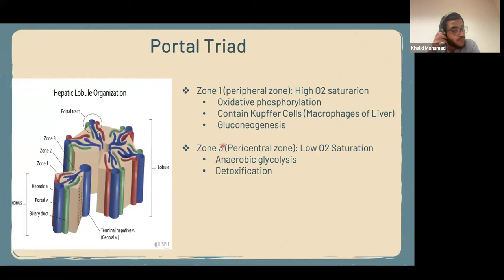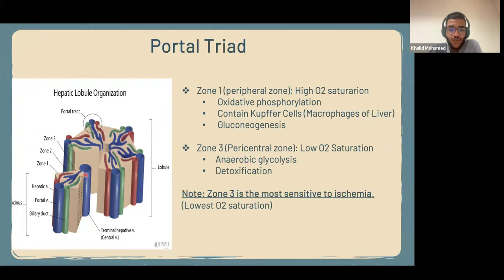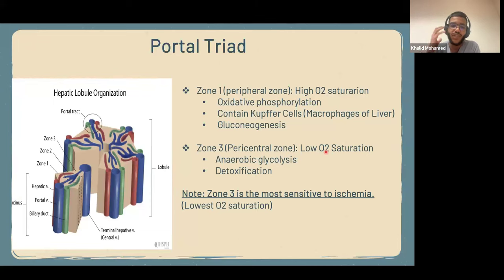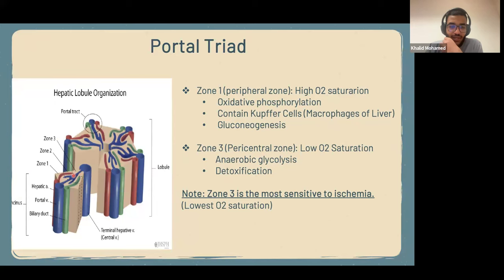One important thing to note: because zone three has the lowest oxygen saturation, it is the most sensitive zone to ischemia or ischemic injury. Ischemia means low perfusion — low blood flow and low oxygen to the organ. So the most sensitive part will be zone three, and therefore the function most affected will be detoxification. Since this zone already receives the least oxygen, if there's ischemic injury, it will be at highest risk.